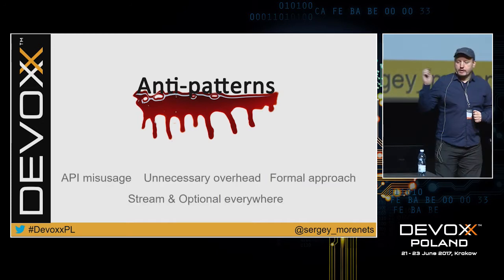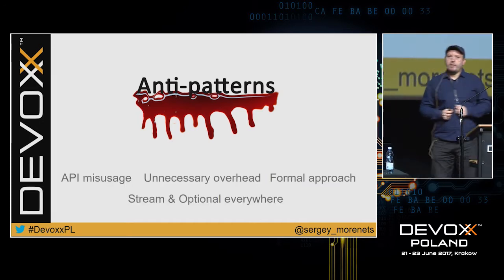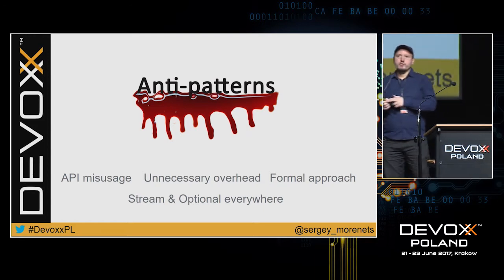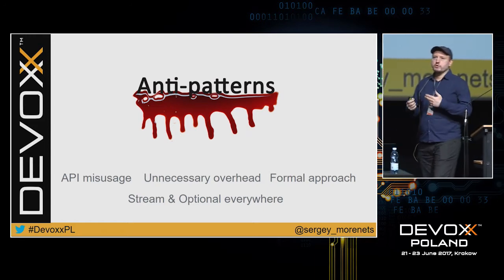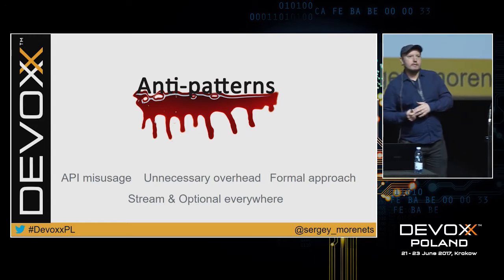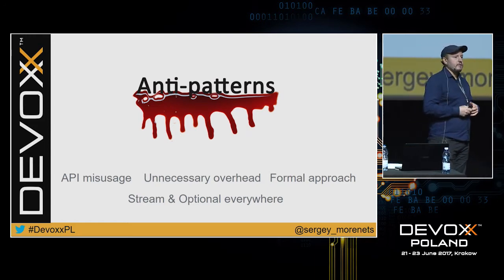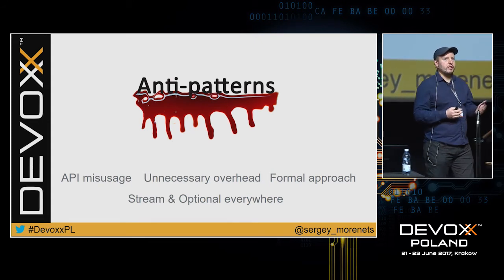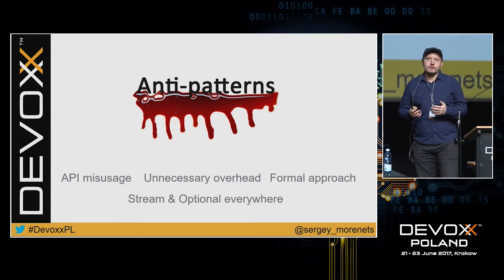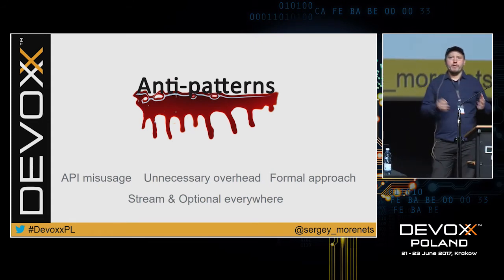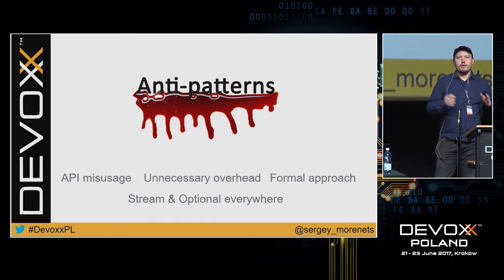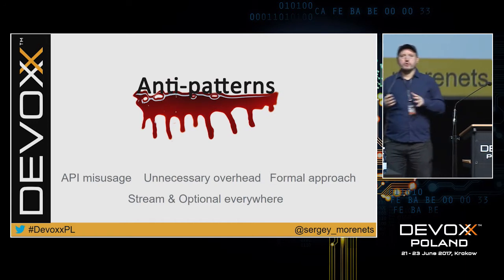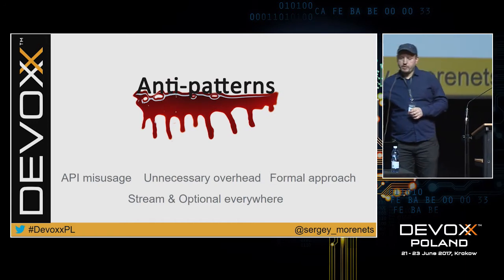The main reasons for anti-patterns appearing are: first, API mis-usage — using the API in the wrong way. The second reason is that people try to use it like a silver bullet, so everywhere they used old structures they started using Java 8 API.